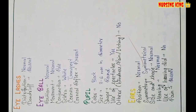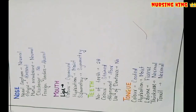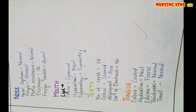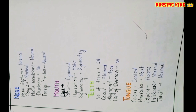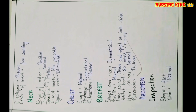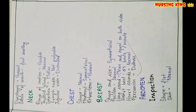For the ears, check size, shape, and hearing function — whether good or not. Every part of the body needs to be examined and any abnormalities noted. Also examine the nose, mouth, teeth, and tongue. The abdominal examination is most important — covering inspection, palpation, percussion, and auscultation.